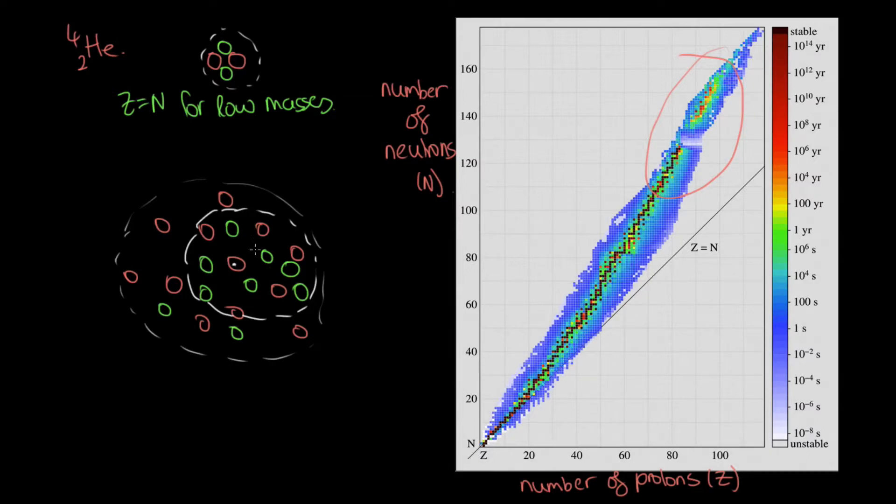We need more neutrons than protons in order to make that nuclear force stronger than the electrostatic repulsion. So as we get up into this part of the curve, we need more neutrons than protons.